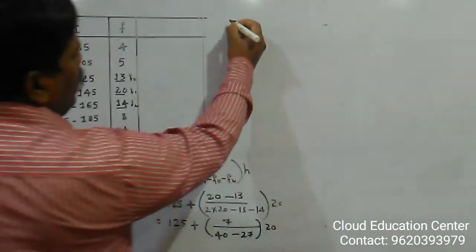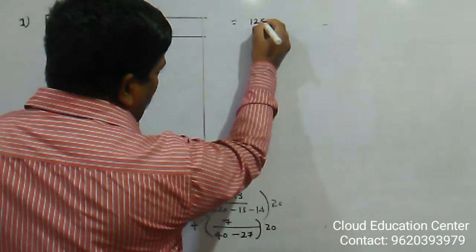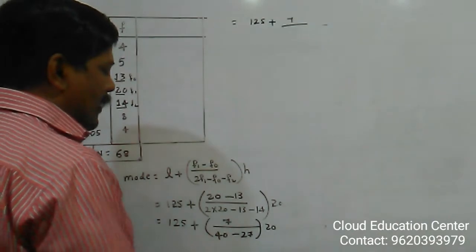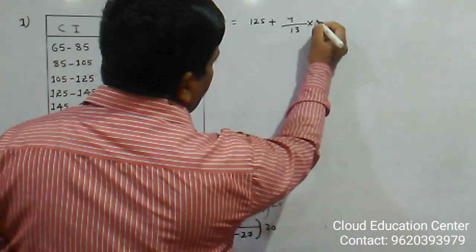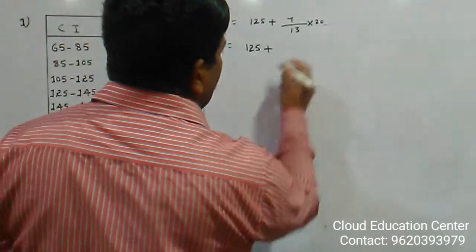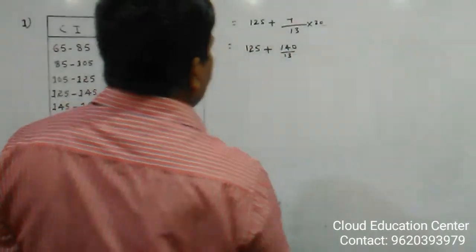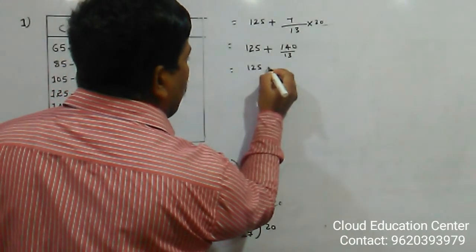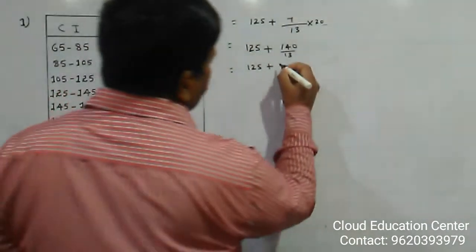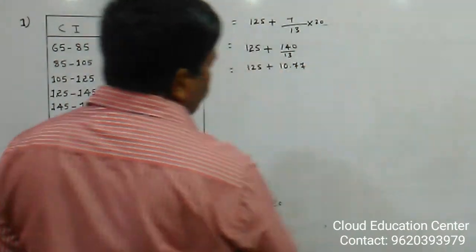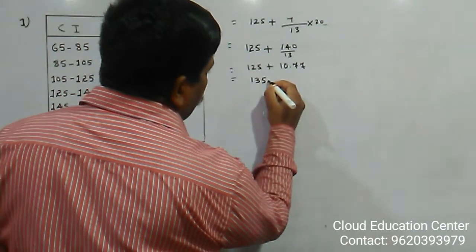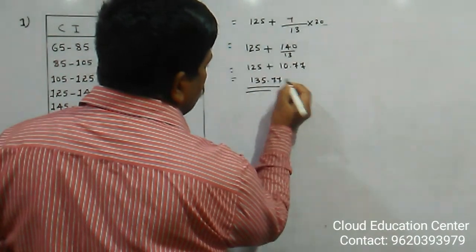Now it is 125 + 7 / (40 − 27) × 20, which is 125 + 7 / 13 × 20, giving 125 + 140/13. A student works it out: 140 ÷ 13 = 10.77, so 125 + 10.77 = 135.77. That is your mode.